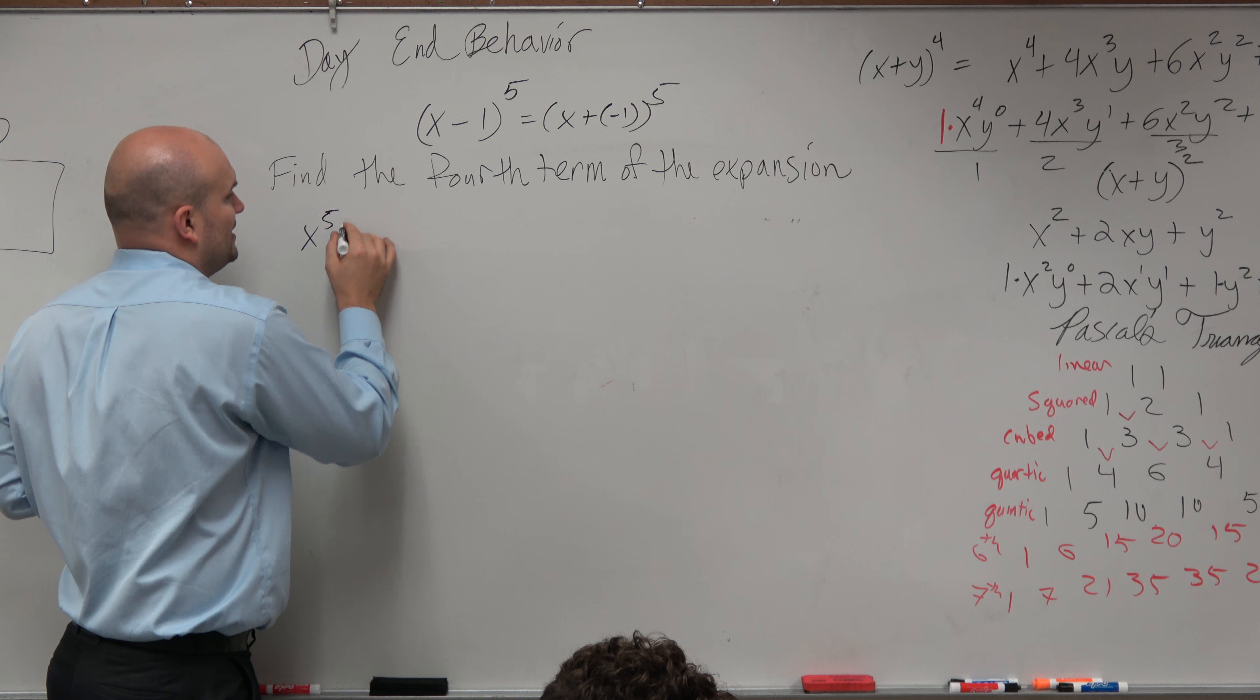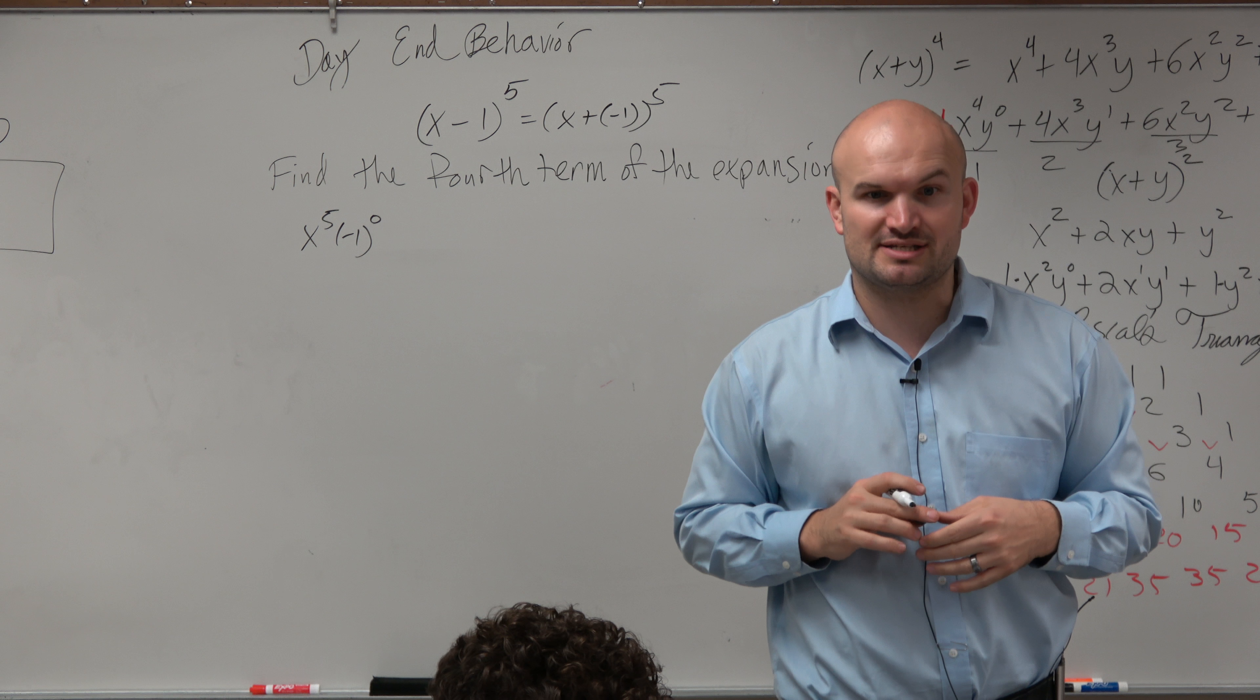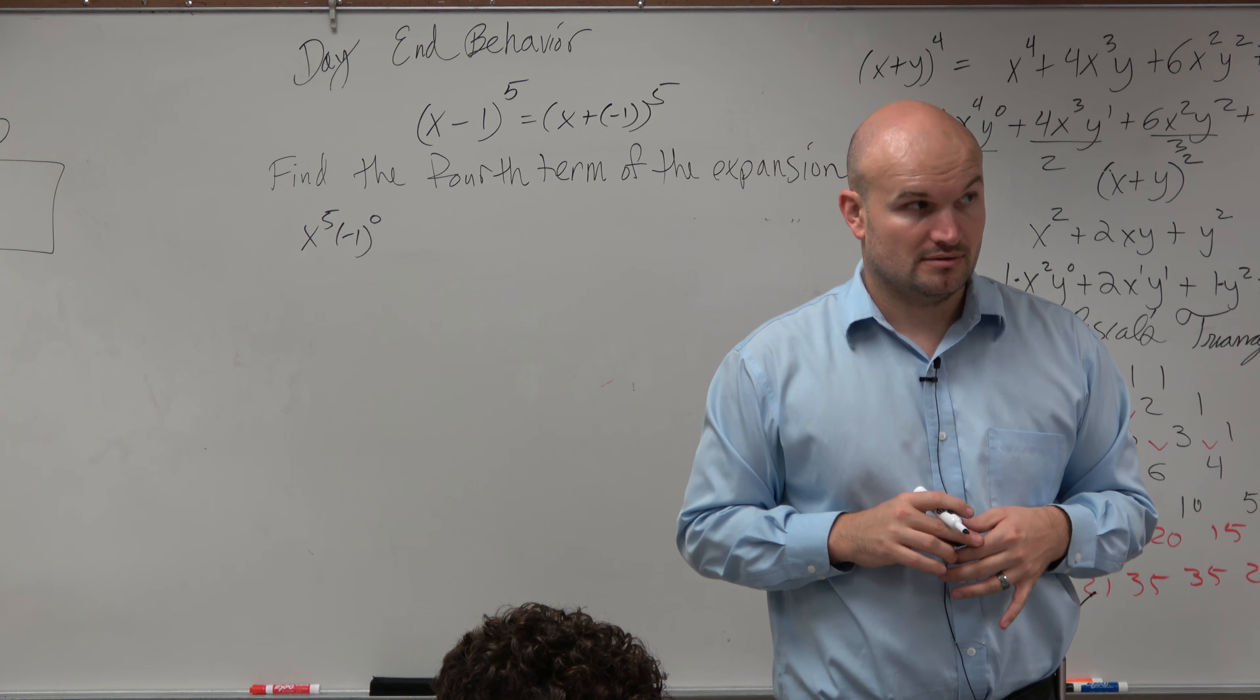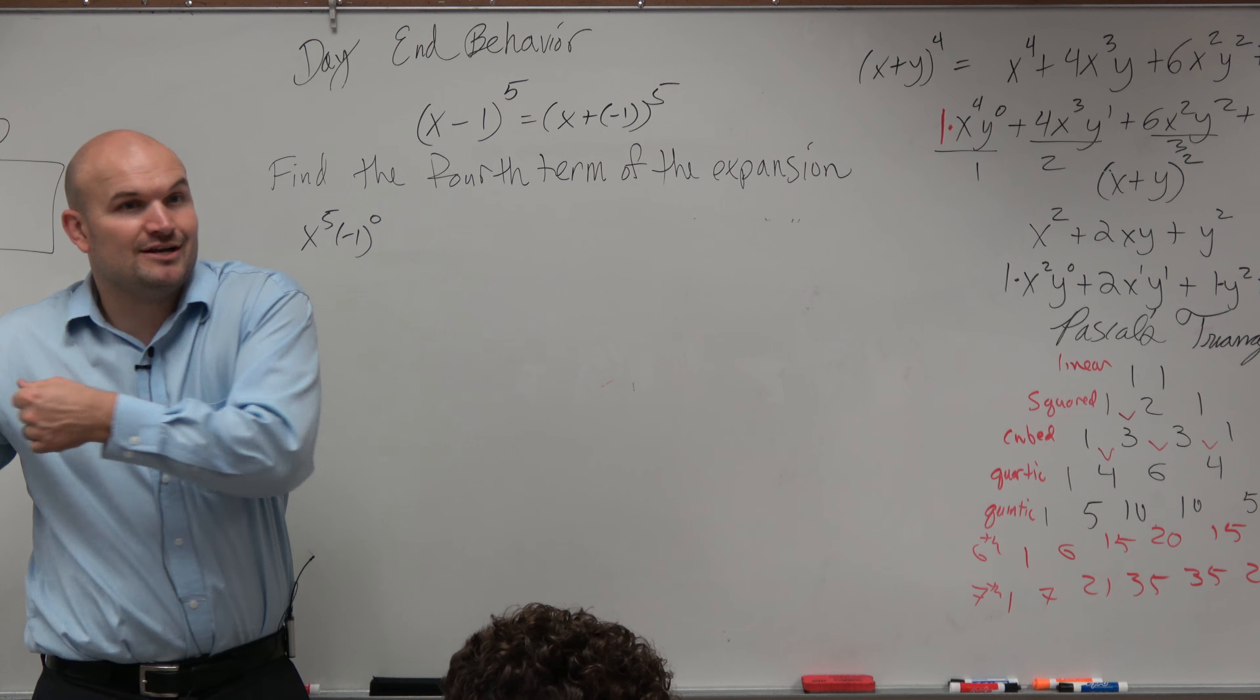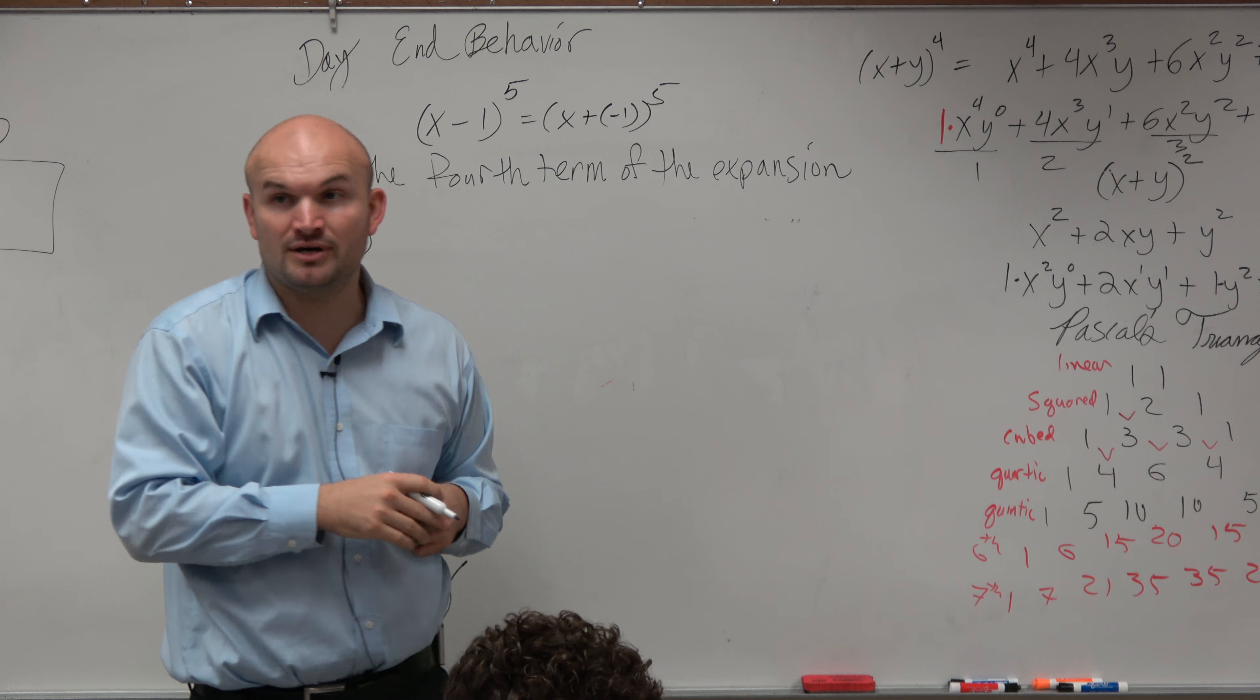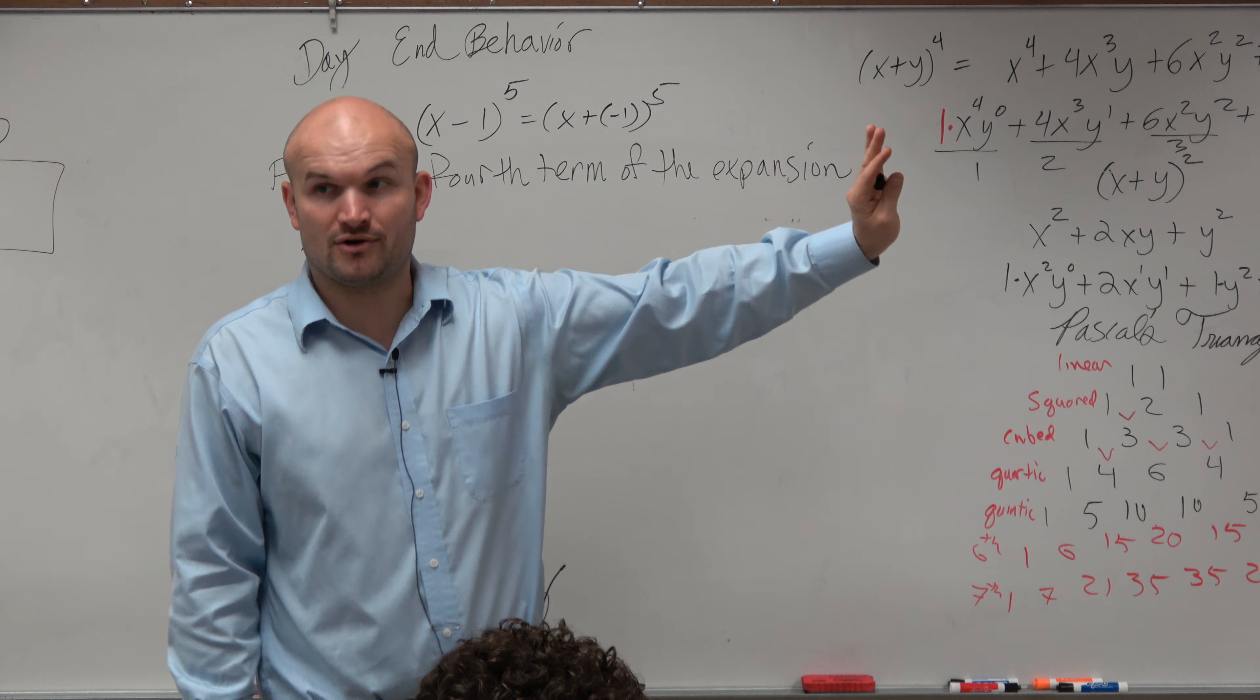Would everybody agree with me that I don't need to remember much, but I know my first term is x to the fifth negative 1 to the 0? Right? And then all I know is based on what we found at the beginning of class, I know my x is going descending order, and my negative 1, my second term, goes in ascending order.